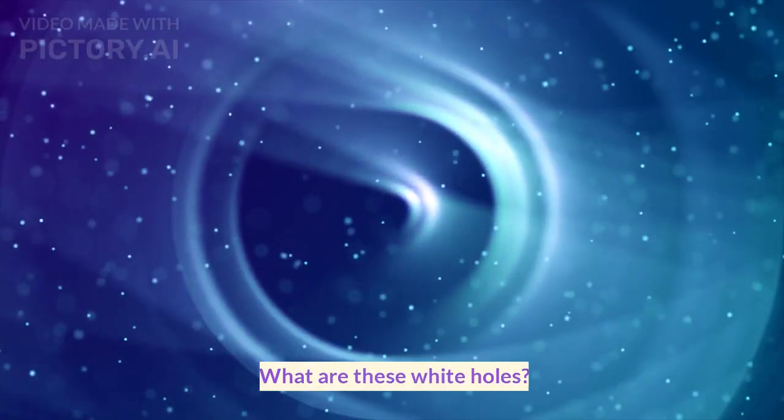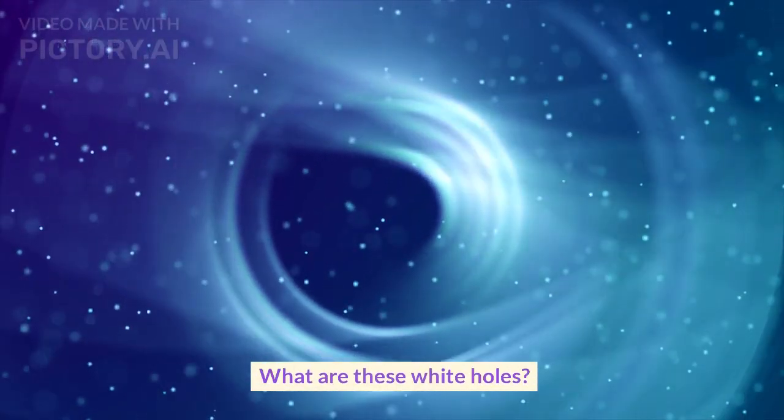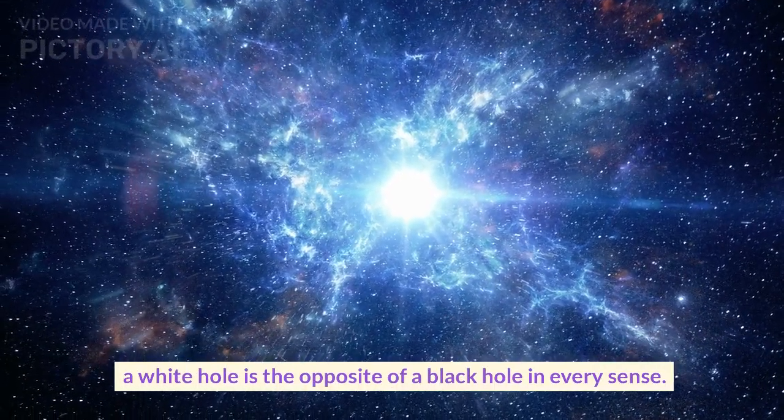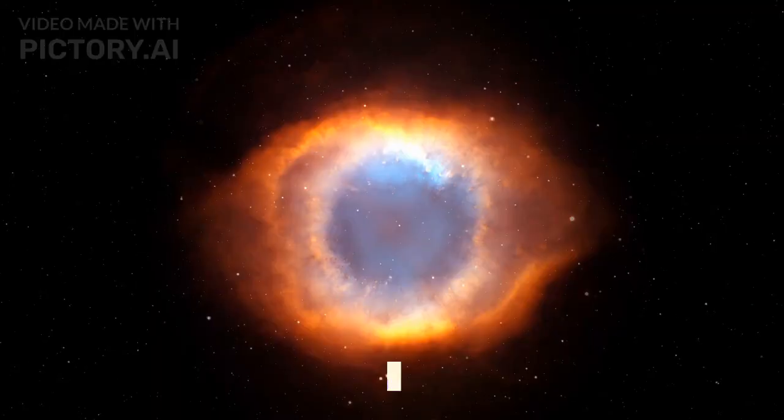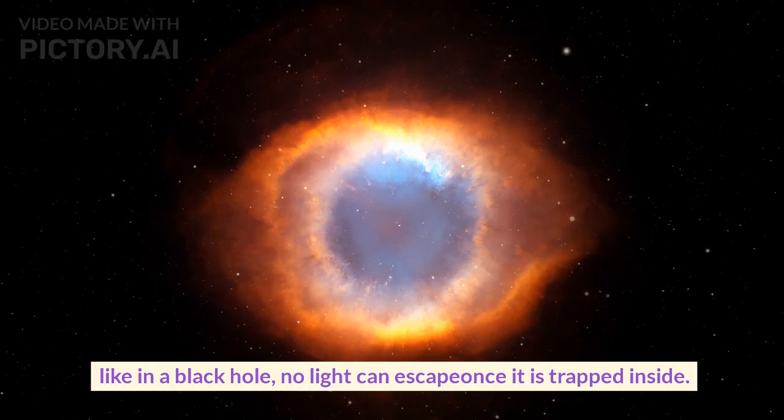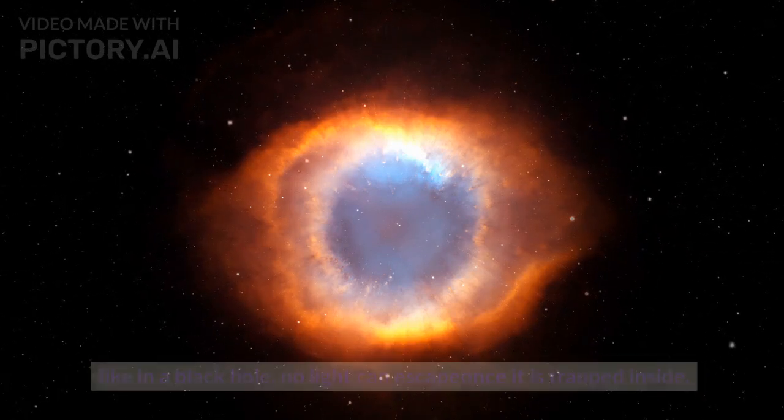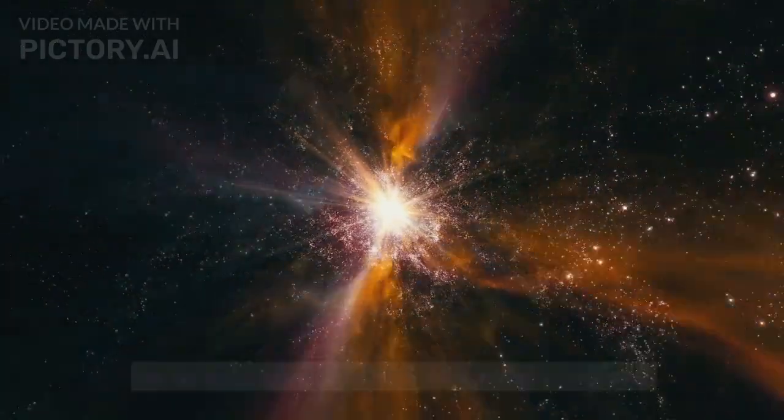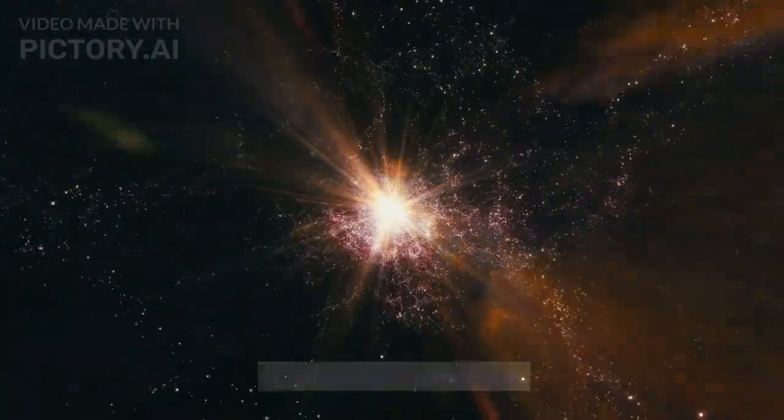What are these white holes? Like white is the opposite of black, a white hole is the opposite of a black hole in every sense. Like in a black hole, no light can escape once it is trapped inside. On the other hand, in a white hole no light can enter—it can only be emitted by it.